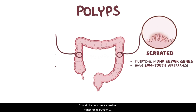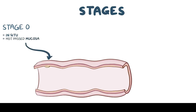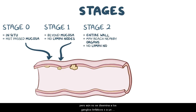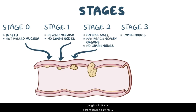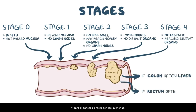When tumors become cancerous, they can be categorized into stages. Stage 0 is carcinoma in situ, meaning that the tumor has not grown beyond the mucosa. Stage 1 is when the tumor has grown beyond the mucosa but has not spread to lymph nodes or distant organs. Stage 2 is when the tumor has invaded the whole colonic or rectal wall, and may have reached nearby organs or tissues, but still has not spread to lymph nodes or distant organs. Stage 3 is when the tumor has spread to lymph nodes, but still hasn't spread to distant organs. Finally, stage 4 is metastatic, meaning that the tumor has spread to distant organs. The most common site of metastasis for colon cancer is the liver, and for rectal cancer it's the lungs.